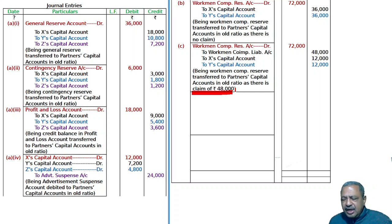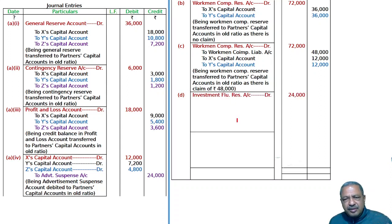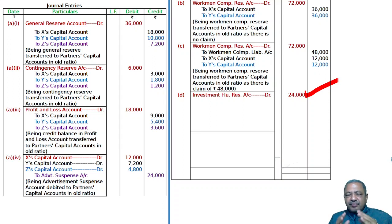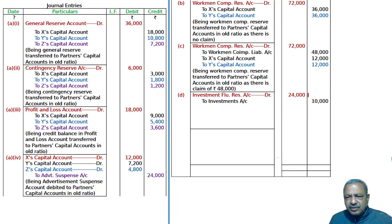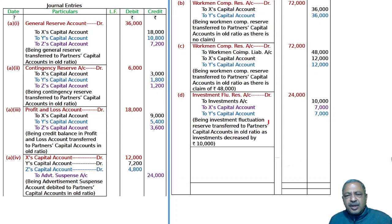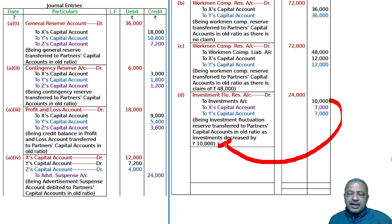Give the general entry to distribute investment fluctuation reserve of $24,000 at the time of admission of Z when investment market value is $1,10,000 and book value is $1,30,000. The farm has two partners X and Y. Market value $1,10,000 versus book value $1,20,000 shows a decrease of $10,000. So investments are reduced by $10,000, and $24,000 minus $10,000 equals $14,000 is transferred to X capital account and Y capital account equally. Narration: being investment fluctuation reserve transferred to partners capital accounts in old ratio, as investments decreased by $10,000.